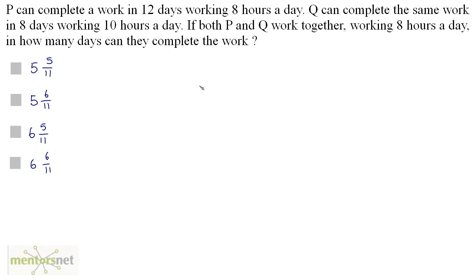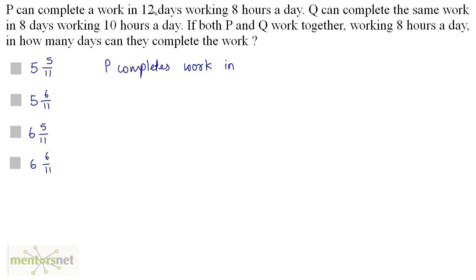P can complete a work in 12 days working 8 hours a day. Q can complete the same work in 8 days working 10 hours a day. If both P and Q work together working 8 hours per day, in how many days can they complete the work? First, let us calculate the total number of hours P and Q each require. P completes work in 12 times 8, which equals 96 hours.